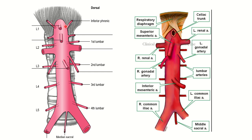The first unpaired branch is the celiac trunk. The second is the superior mesenteric artery, and the third is the inferior mesenteric artery. There is another branch which is the median sacral artery. So these four branches are the unpaired branches of the abdominal aorta; the other branches are paired and arise on both sides.